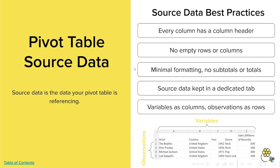Fifth and finally, make sure that your data follows a rectangular format. This means that you want your variables to be your columns and your rows to be your observations. In the case of the data at the bottom of this slide, the variables are things like artist, genre, and millions of records sold, and your observations are the individual artists or musicians and the corresponding data that goes along with them.